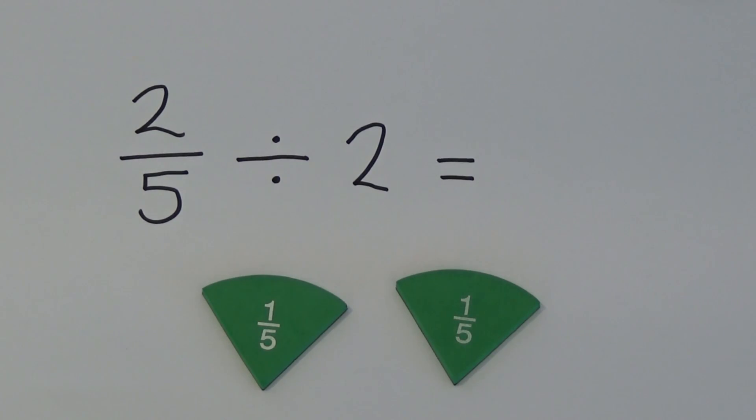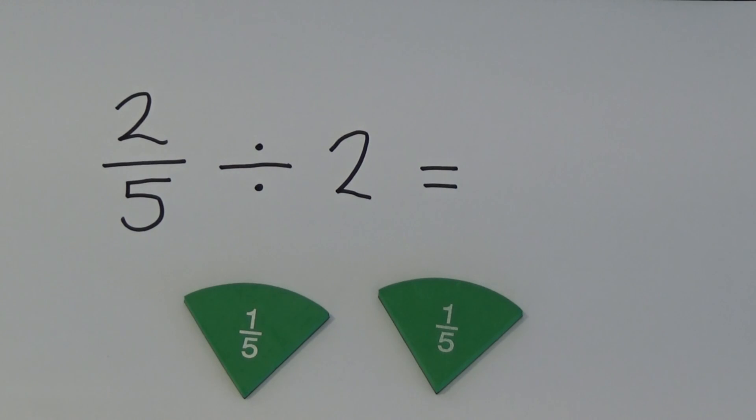If I share my two fifths between two people, each will get one fifth. So two fifths divided by two equals one fifth.